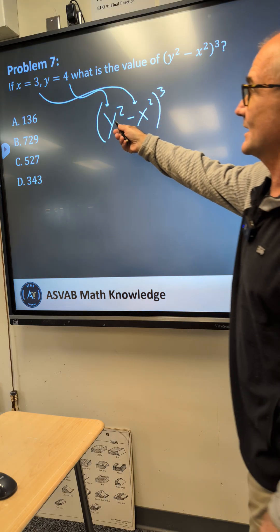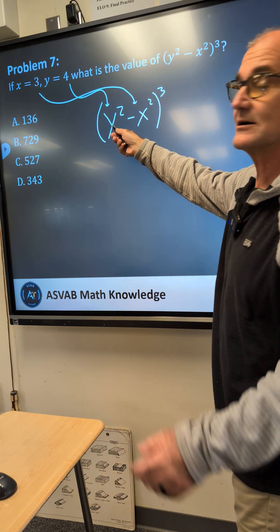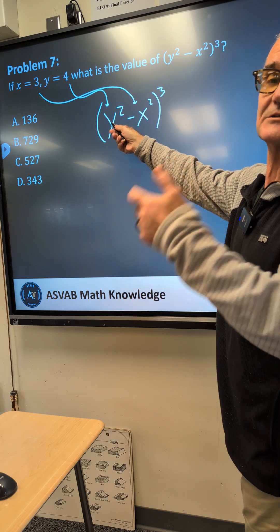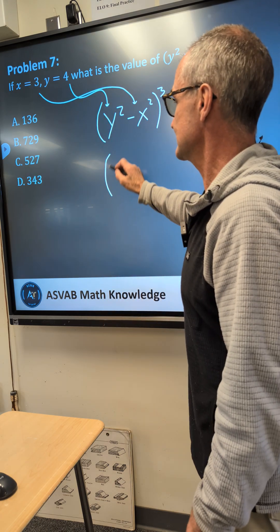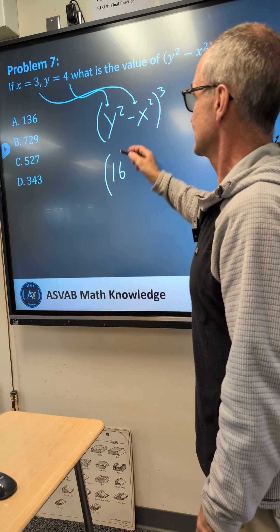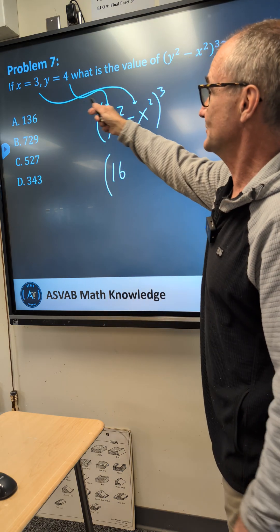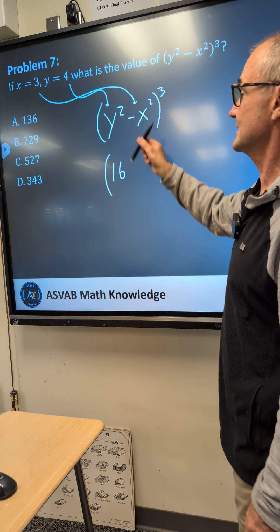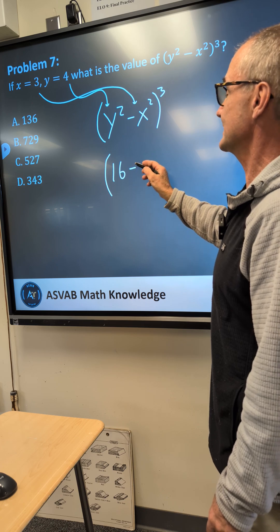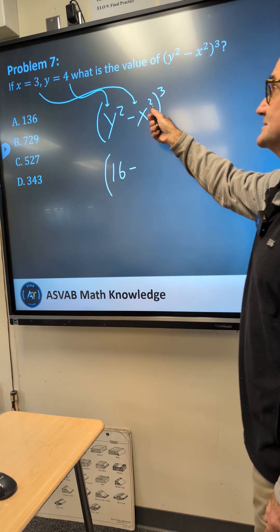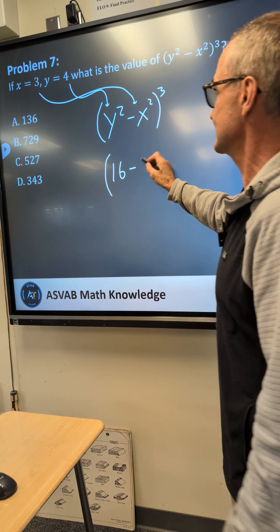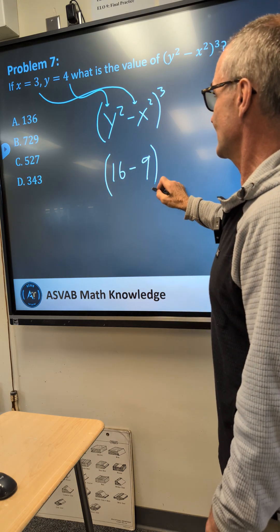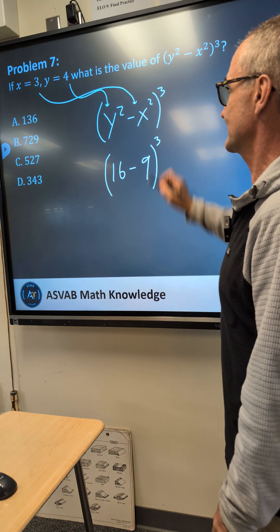So I take that y and plug it in here. y squared: 4 times 4 is 16. Take that 3 and plug it in here. Minus 3 squared: 3 times 3 is 9. All to the power of 3.